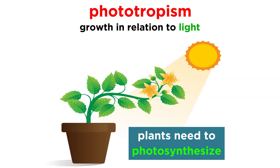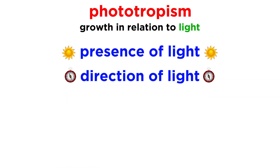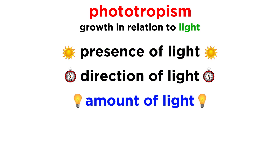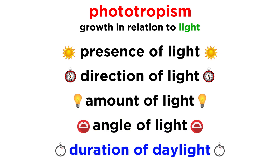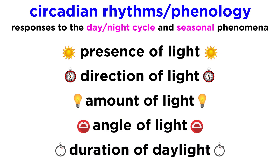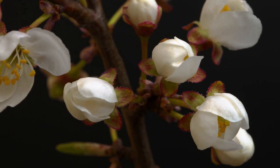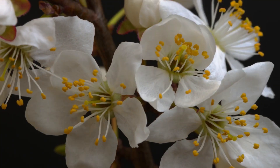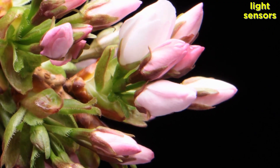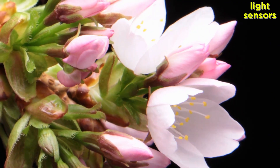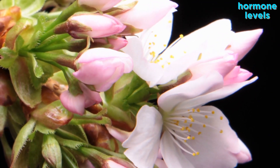Let's now return to the idea of phototropism for a moment. Plants are able to sense the presence and direction of light, but also the amount of light, the angle of the light, and the amount of time each day that light is present. All of this is very important for helping to determine the circadian rhythms and phenology of the plant, which are words that refer to responses towards the day-night cycle on earth, as well as other cyclic or seasonal phenomena. Plant circadian rhythms determine when buds open into flowers, when flowers close for the night, and other day-night cycles of plant behavior.